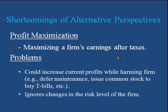If the ultimate goal of the firm were profit maximization — that is, maximization of the firm's earnings after tax — it has certain shortcomings. For example, profit can be increased while actually harming the firm, such as by deferring maintenance, or by issuing common stock to buy treasury bills. While this would increase earnings after tax, issuing common stock to buy T-bills and earn returns will dilute earning per share.